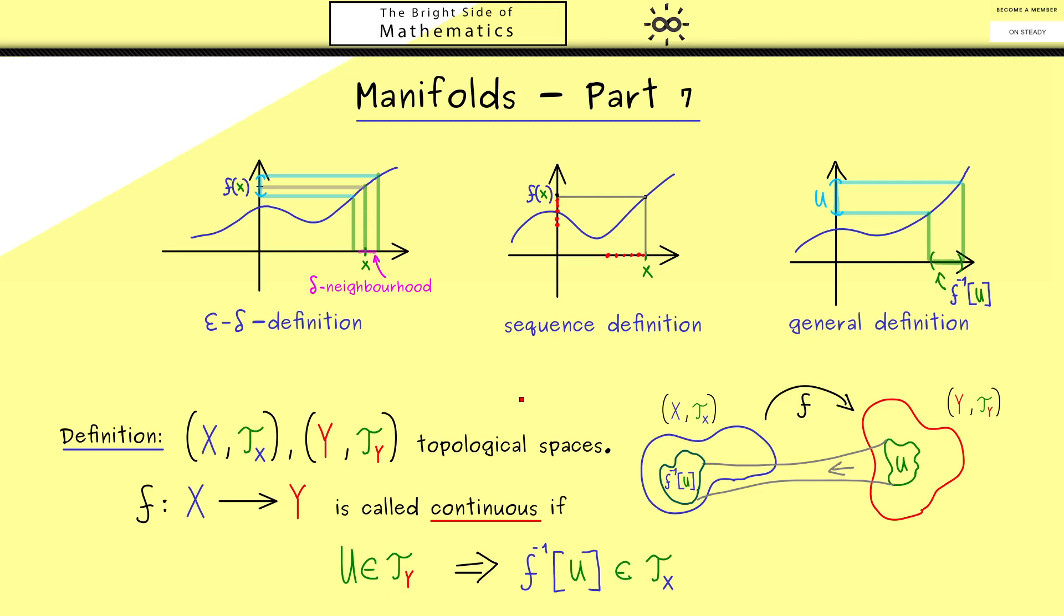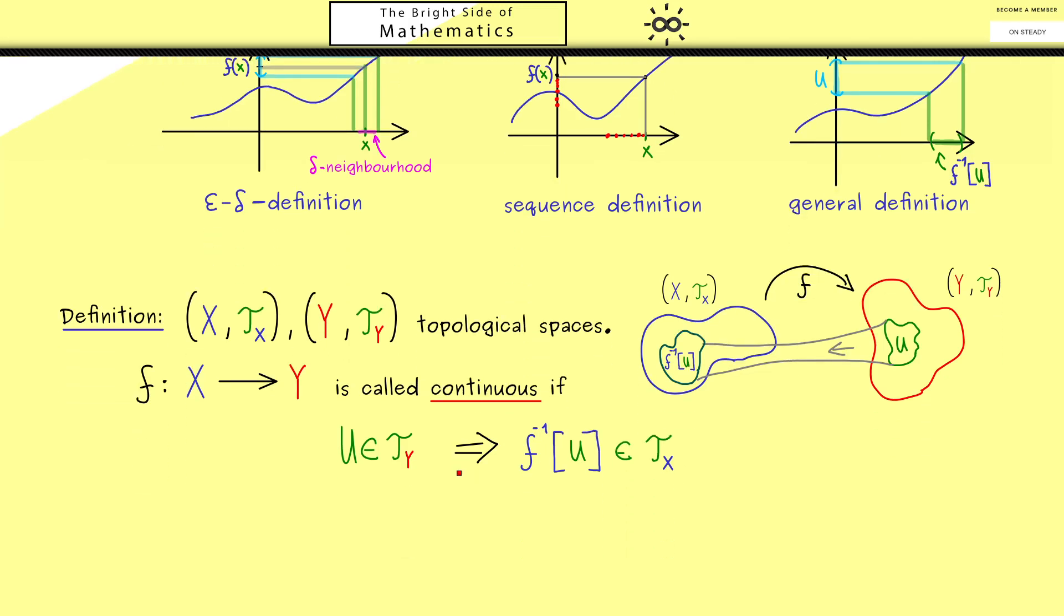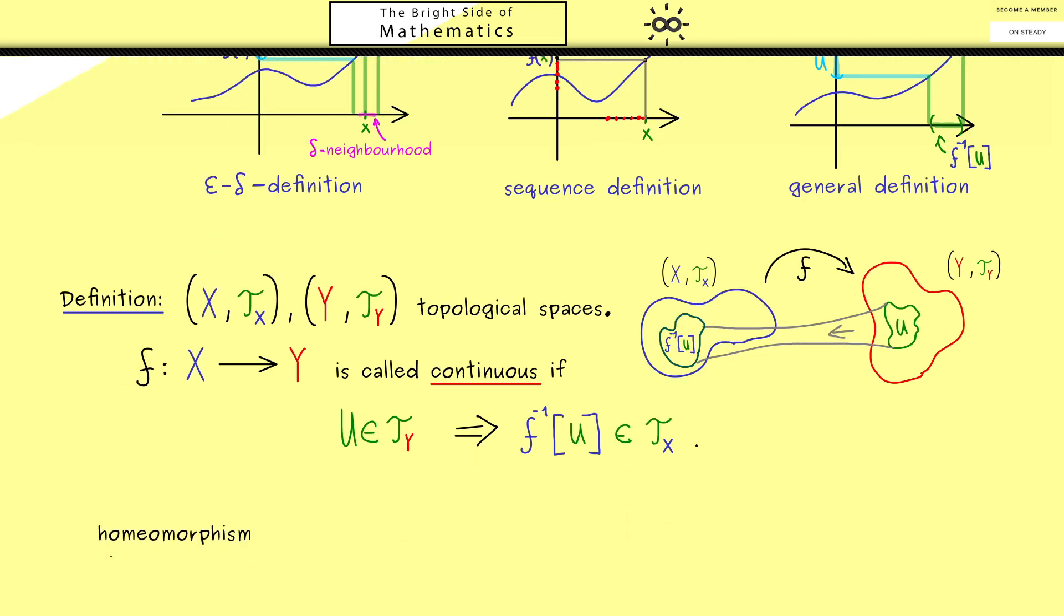Okay, I think in addition I should also tell you about another important notion in topology. And this is a so-called homeomorphism. And this simply tells us that the structure of the topological space is conserved in both directions.